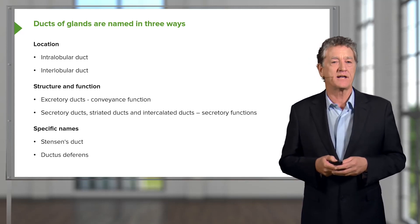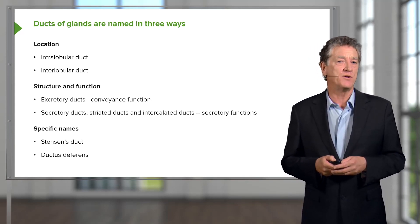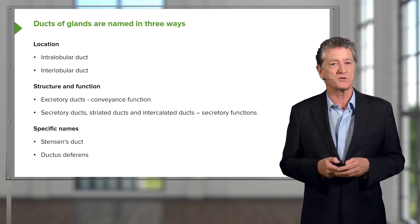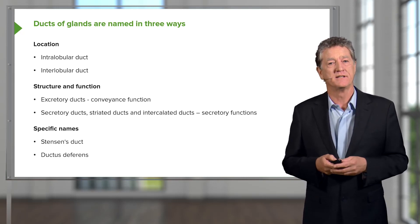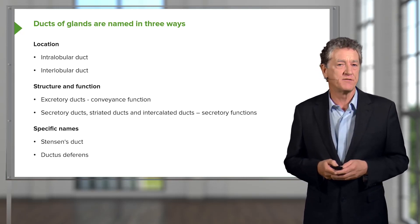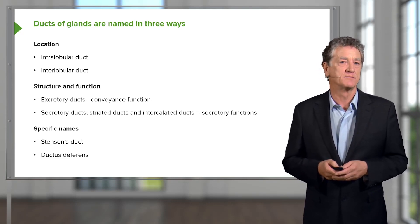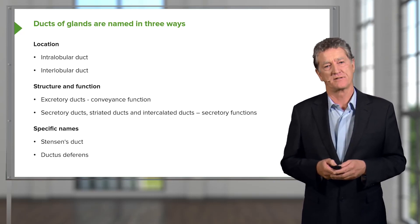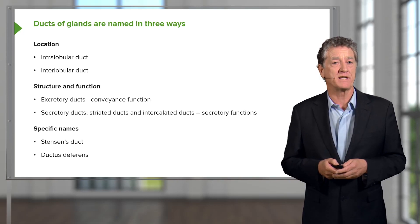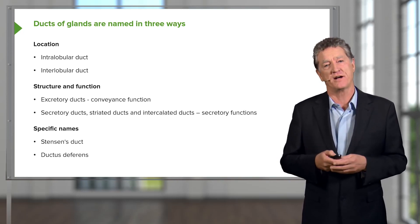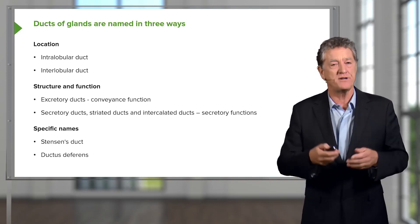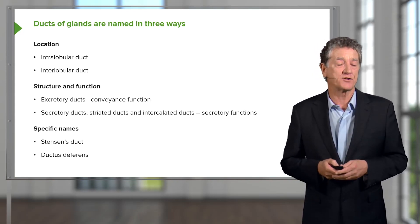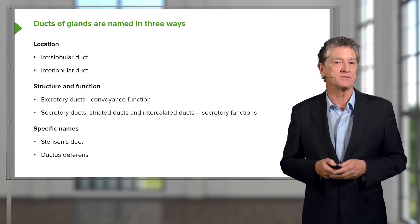Often, ducts are classified according to not just their structure but also their function. They're called excretory ducts if their job is only to convey the secretory product. Most of the large ducts — the interlobar ducts — are excretory ducts because they have no other function than carrying the secretion product to the location where it is going to be active.